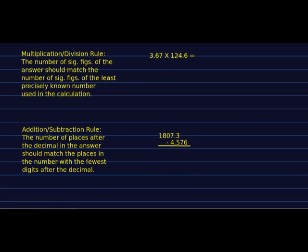Let's look at these rules and do a couple of examples to illustrate them. Here's the multiplication and division rule. Number of sig figs of the answer should match the number of sig figs of the least precisely known number used in the calculation. What do I mean least precisely known? What I mean is the one with the fewest sig figs.